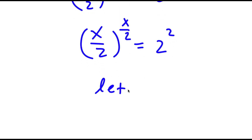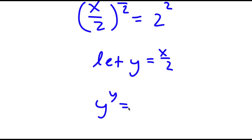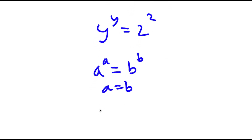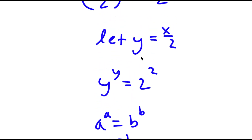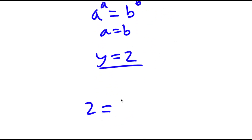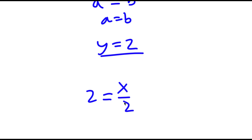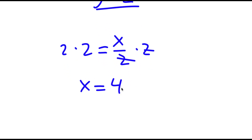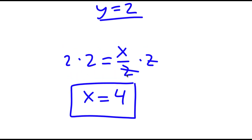Now I'm going to let the variable y equal x over 2. So if I substitute y for x over 2, I have y to the power of y is equal to 2 to the power of 2. If I have something in the form a to the power of a equals b to the power of b, this means that a equals b. So in this case, y is equal to 2. Now, since we set y equal to x over 2, if y equals 2 then 2 equals x over 2. Multiplying both sides by 2, these cancel out and I get x is equal to 4. So this is my answer.